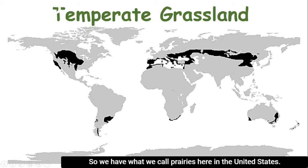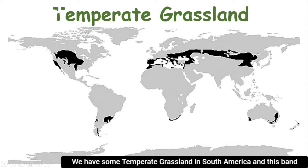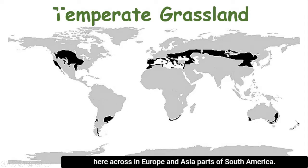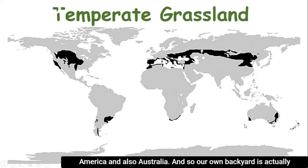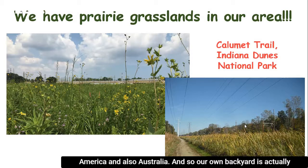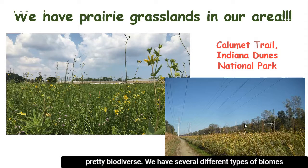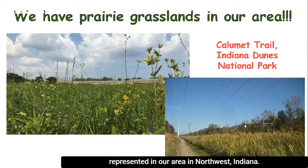We have what we call prairies here in the United States. We have some temperate grasslands in South America, and this band here across in Europe and Asia, parts of South America, and also Australia. Our own backyard is actually pretty biodiverse — we have several different types of biomes represented in our area in northwest Indiana, and one of them is our prairie grassland.